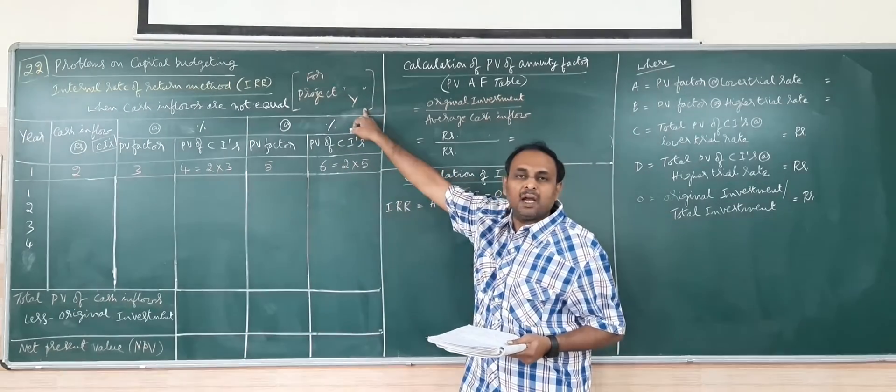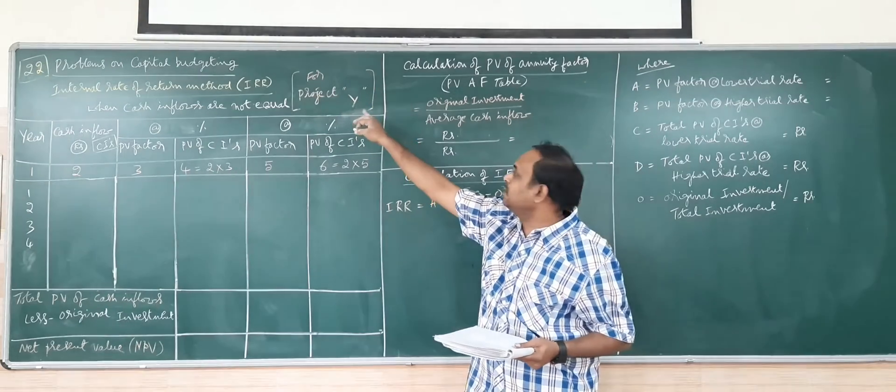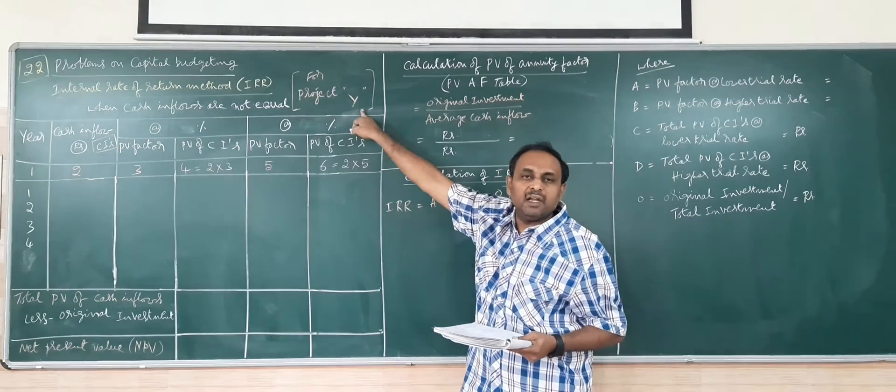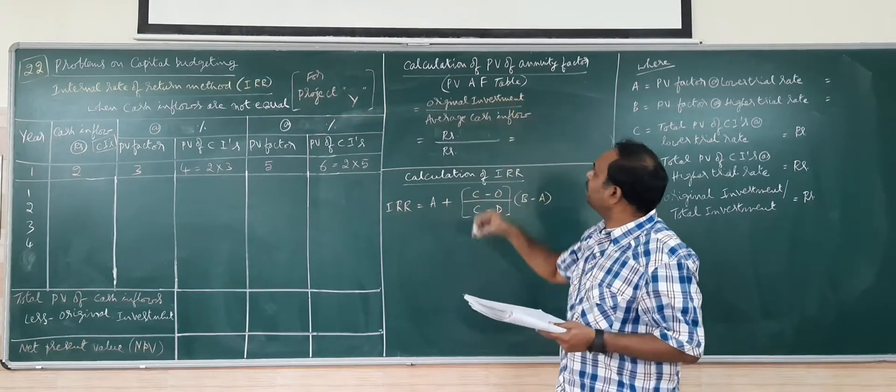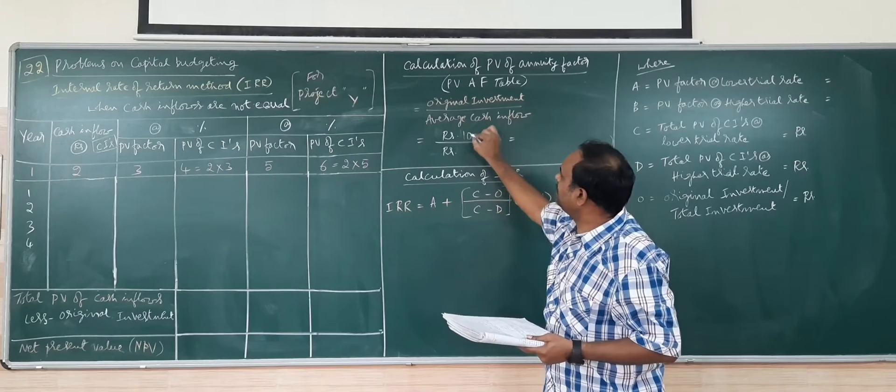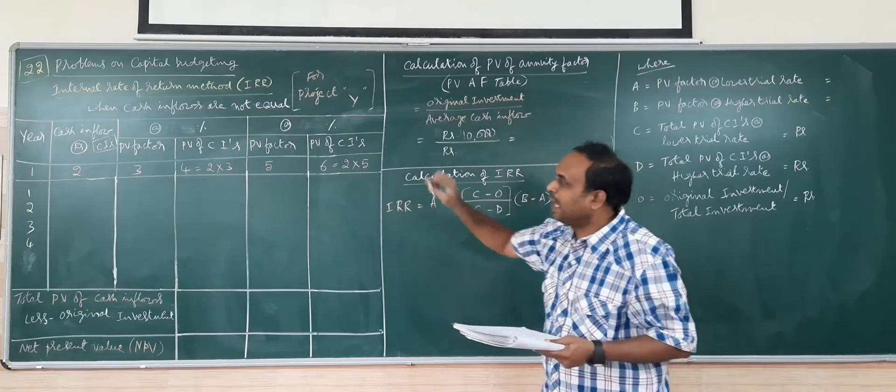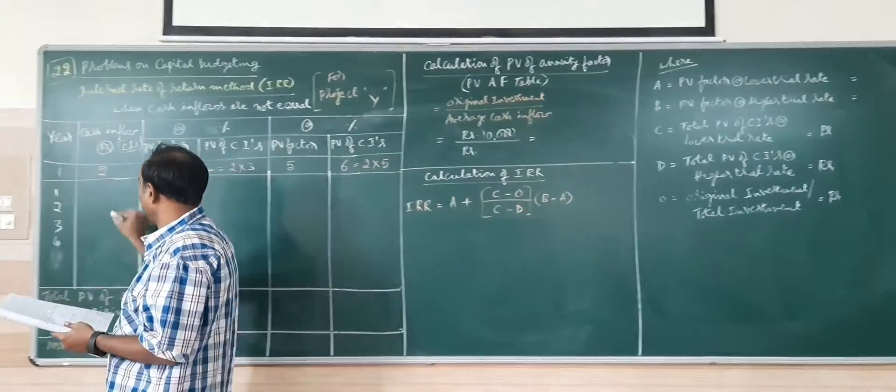We will continue with project Y. After working out the IRR for project X, we will go for calculating IRR for project Y. Project Y also we will try to find the annuity factor. What is an investment? 10,000. Average of cash inflows we have to find.